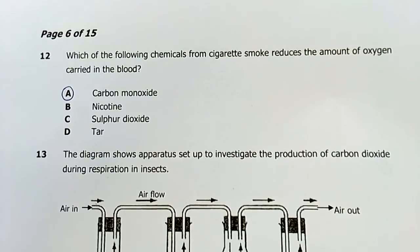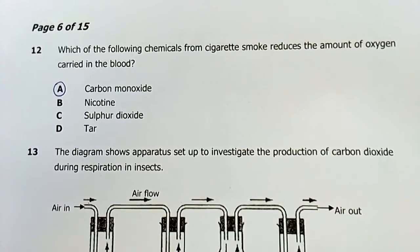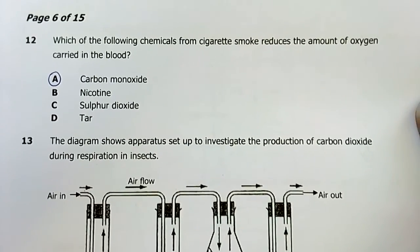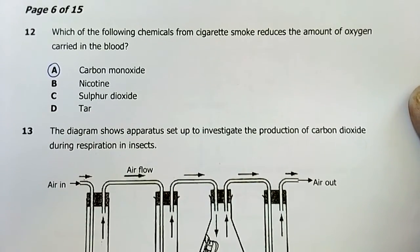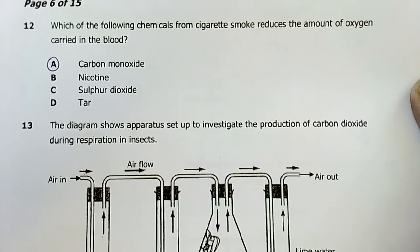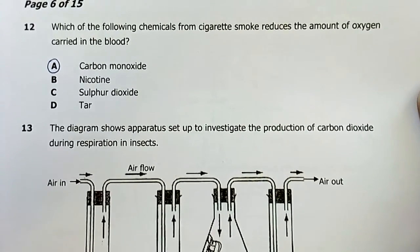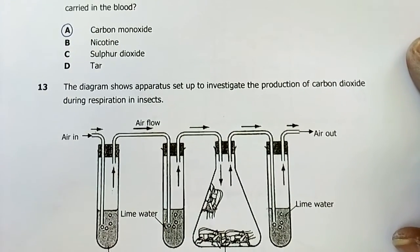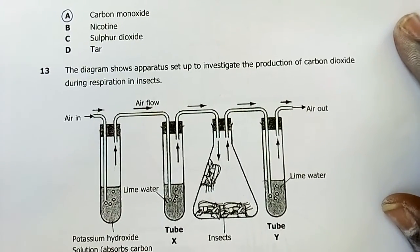Number twelve: which of the following chemicals from cigarette smoke reduces the amount of oxygen carried in the blood? The answer is carbon monoxide. Hemoglobin has a high affinity for carbon monoxide, meaning it binds easier with carbon monoxide than with oxygen. The CO will replace oxygen in terms of being bonded to hemoglobin.